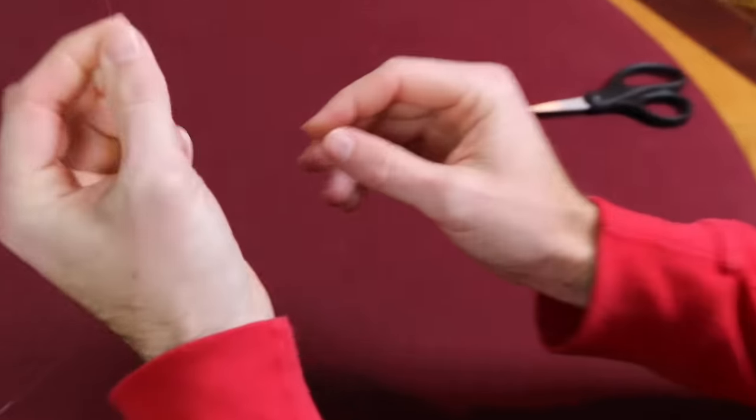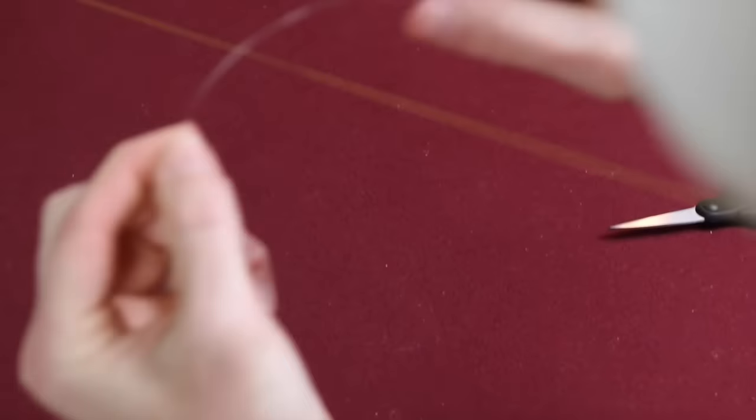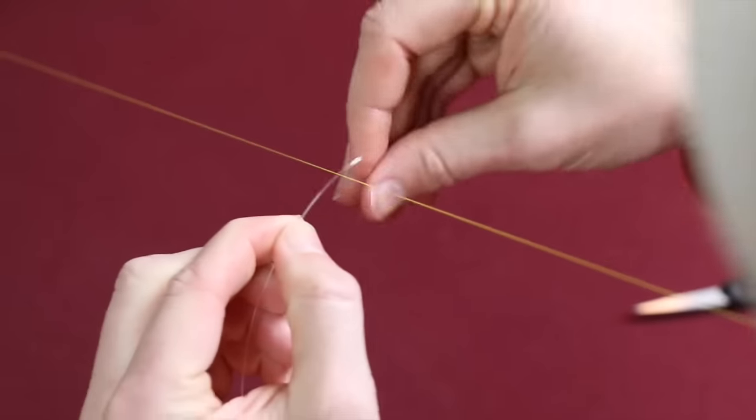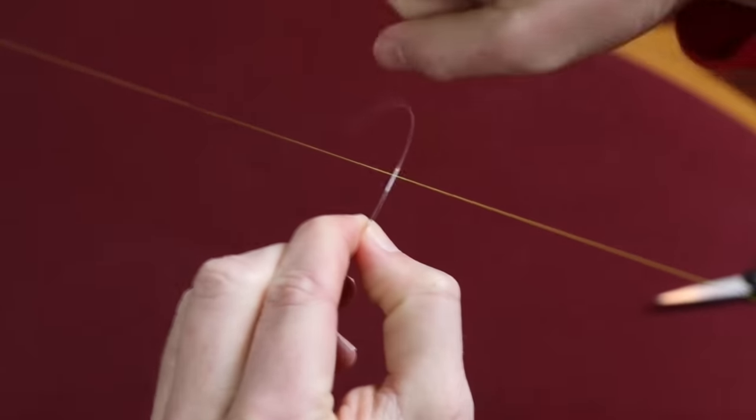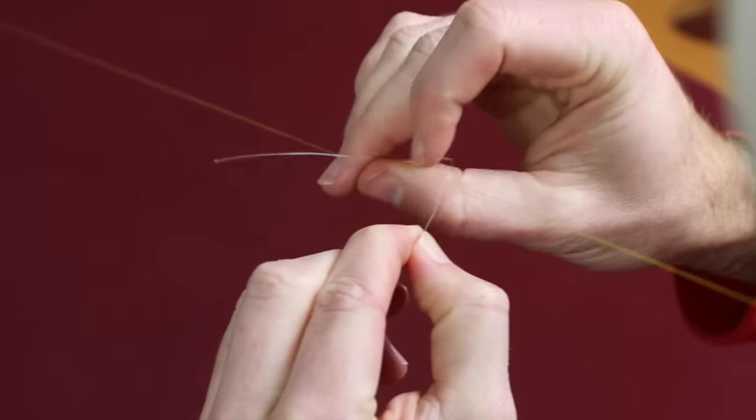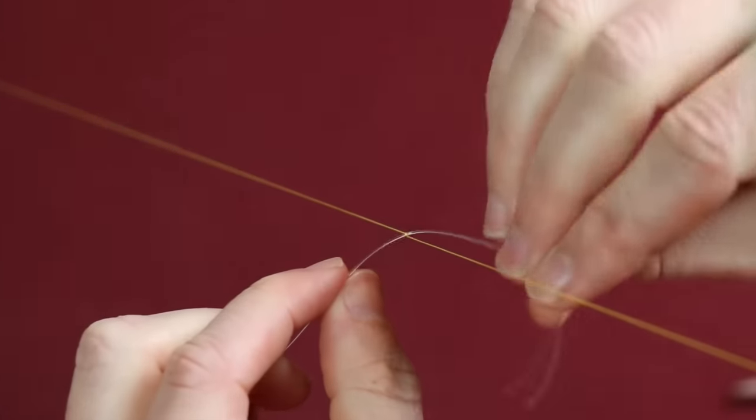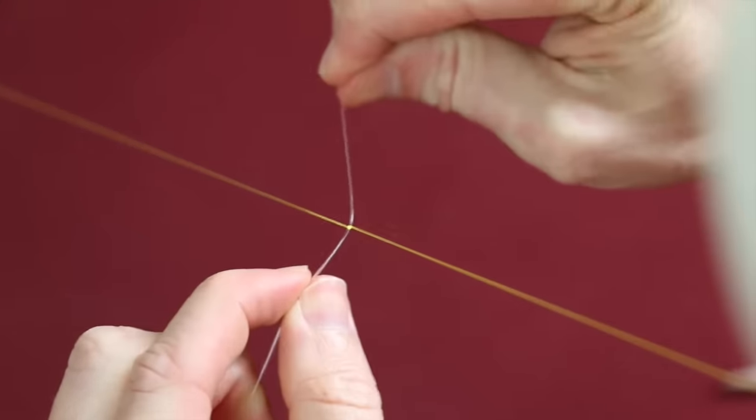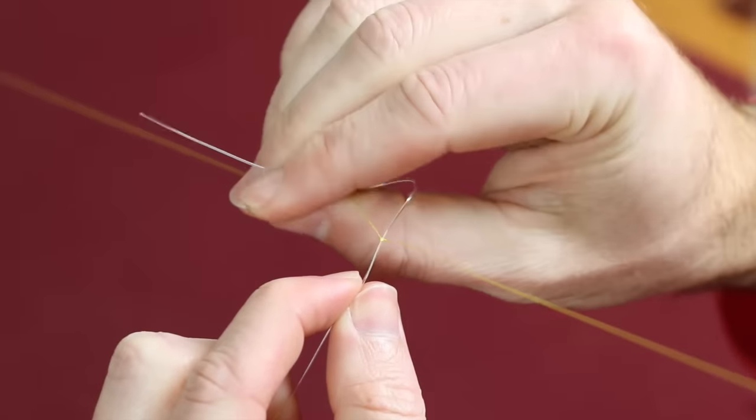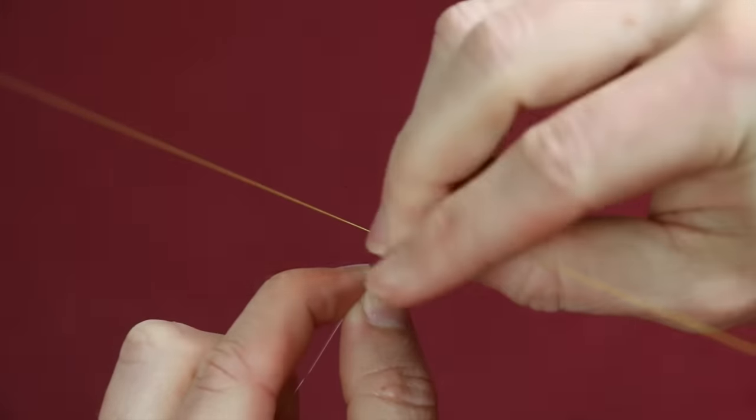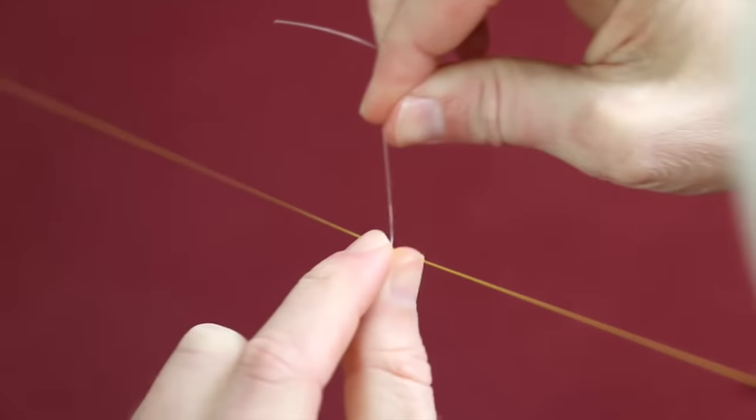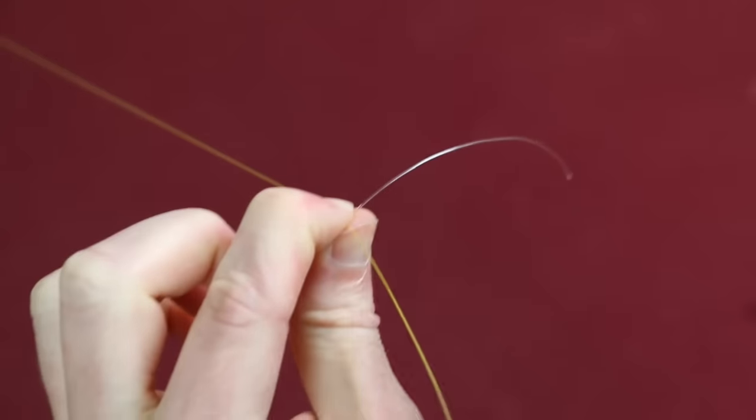So really the first step is to just hover the leader over the line. Going away from you first, going towards the rod, you just go around the line one time and pull it straight. We do the same thing going towards us. Pull it straight. Another towards the rod, straight. And back towards us, straight. So that was a total of four times.